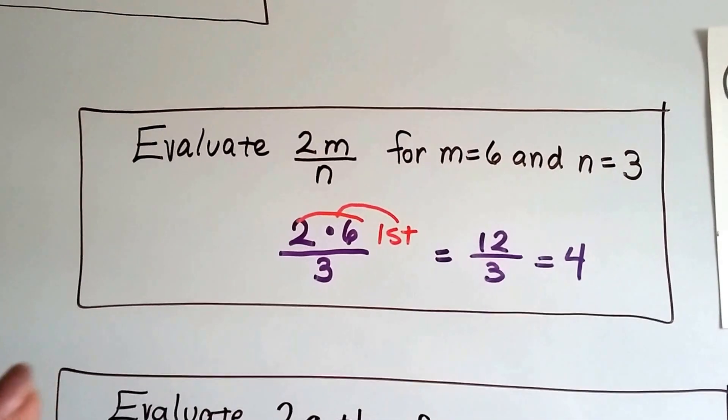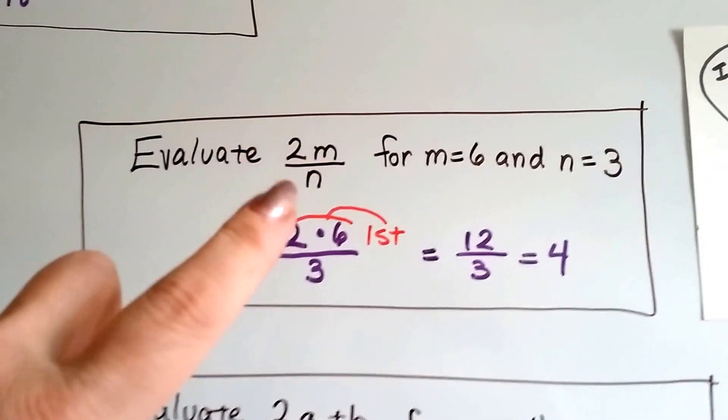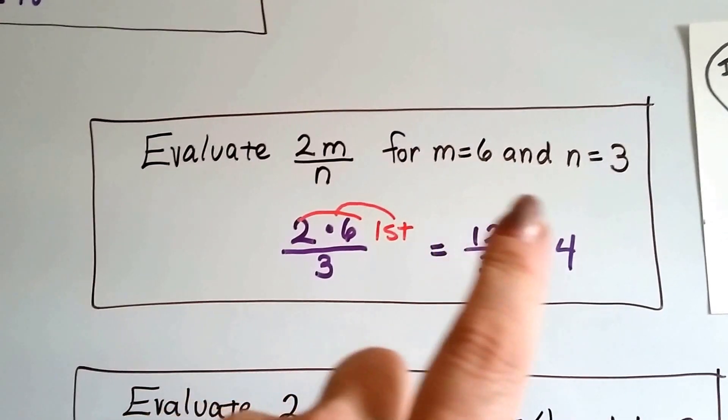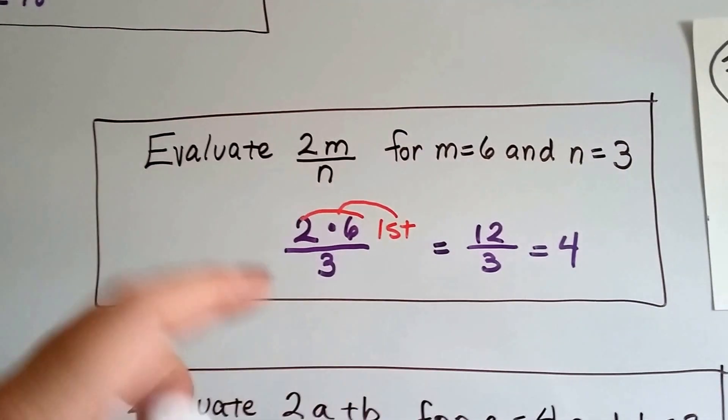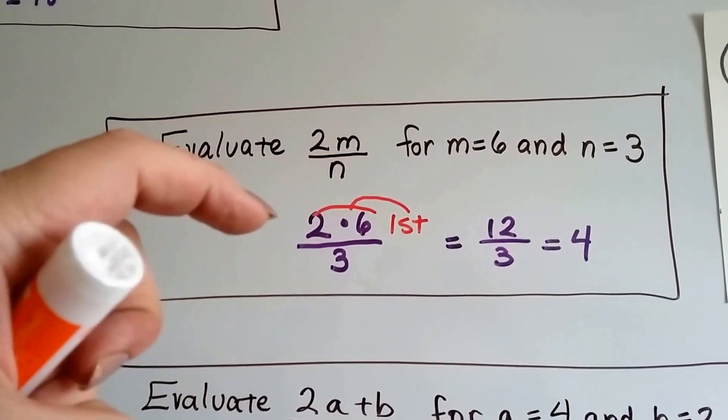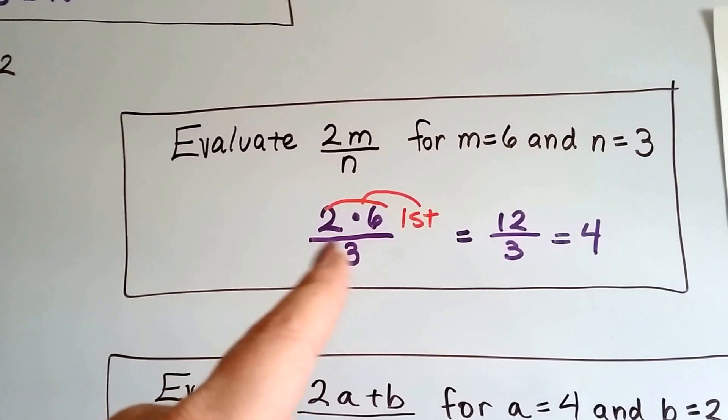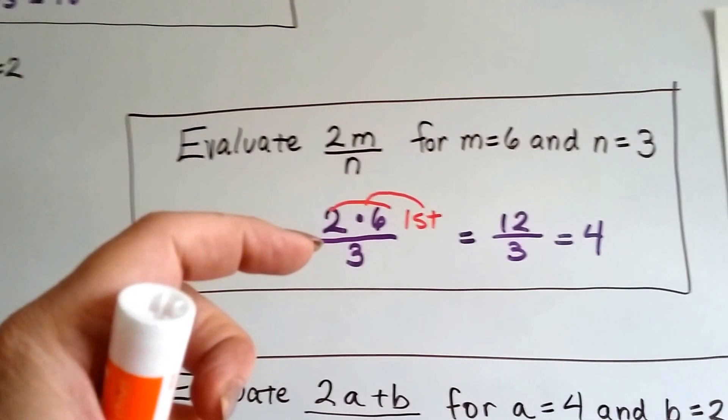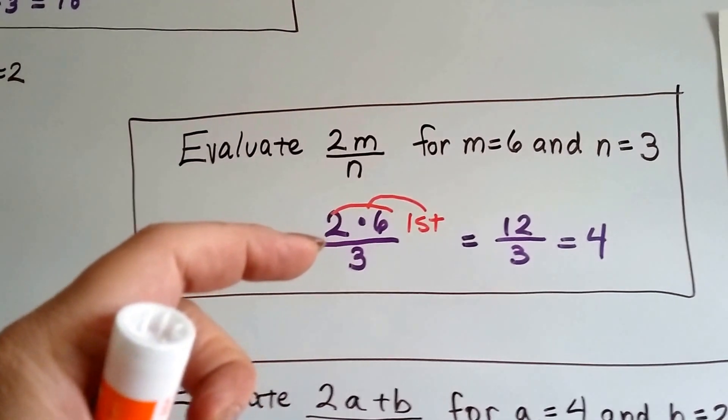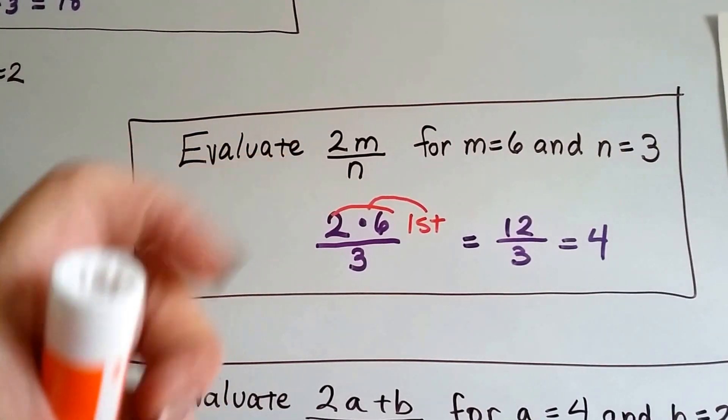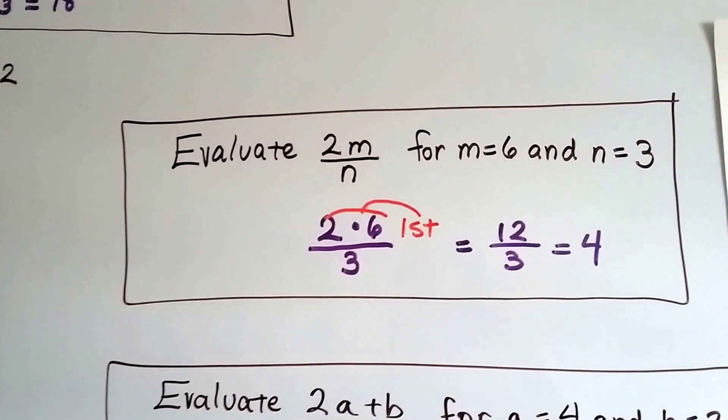If we need to evaluate 2m over n and m equals 6 and n equals 3, then we do the top, the numerator first. 2 times 6, which is 12. And then we put it over the 3. That's the division. You can almost look at it like the fraction line is like parentheses, saying do that up there first. 12 divided by 3 is 4.